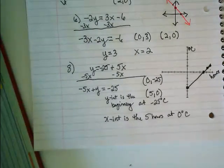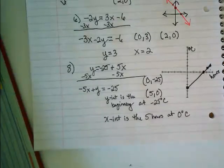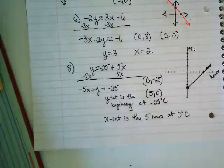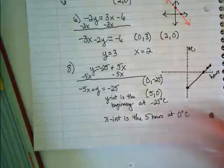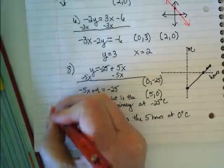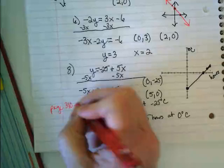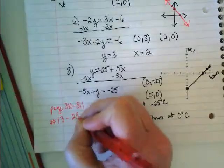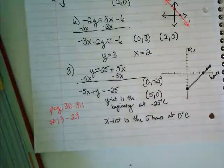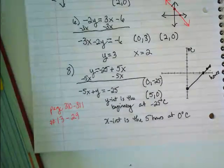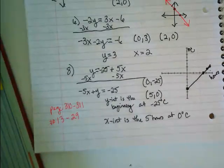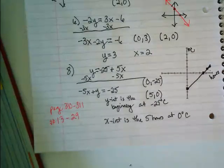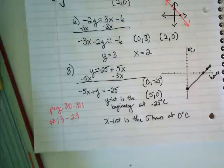Okay, so you guys are going to have problems like those, and then you're going to use intercepts to graph some problems. So, the numbers we're doing today, and this is also on classroom, on page 310 to 311, you're doing numbers 13 to 29. Oh, that's too many graphs. 1, 2, 3, 4, 5, 6. No, it's not. It's only 6 graphs. 13 to 29.